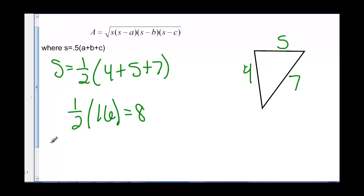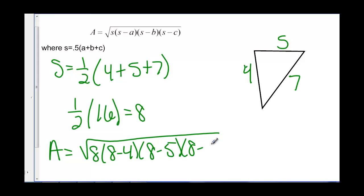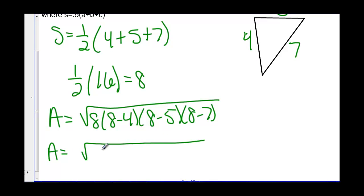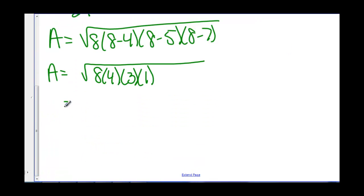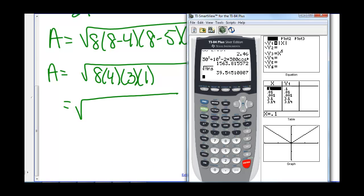So then we have A equals the square root of 8 times 8 minus 4 times 8 minus 5 times 8 minus 7. So that is the area equals the square root of 8 times 4 times 3 times 1. So that is the square root of 96.